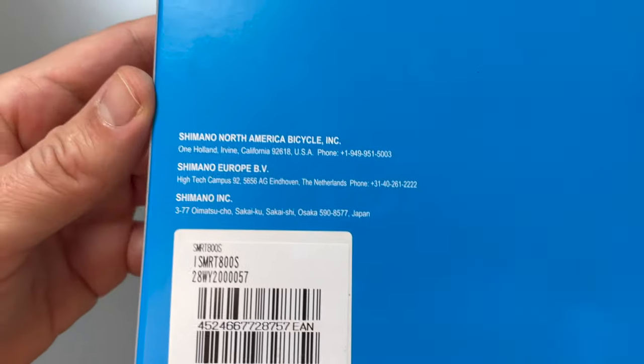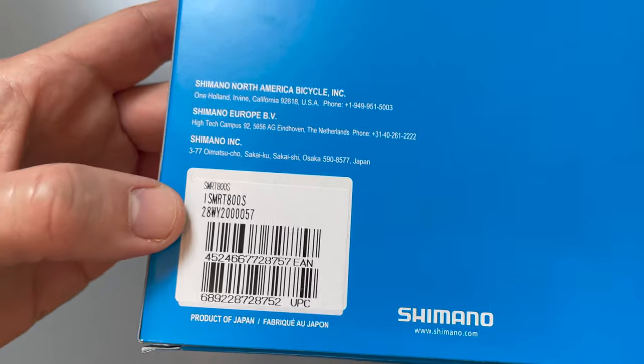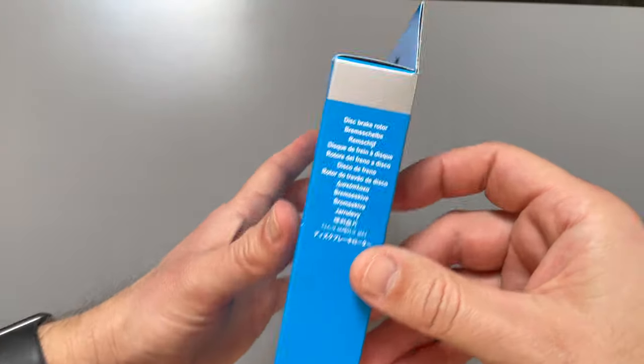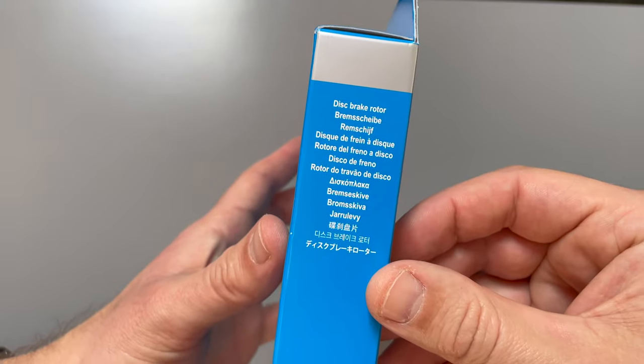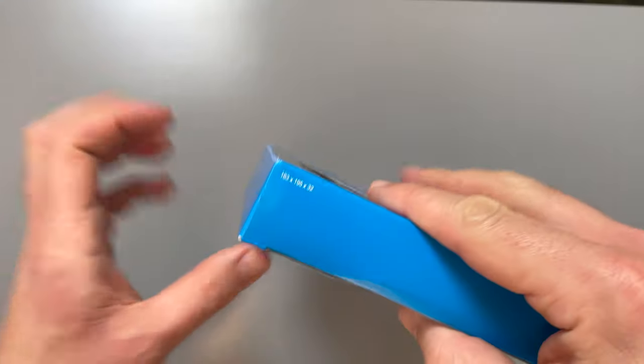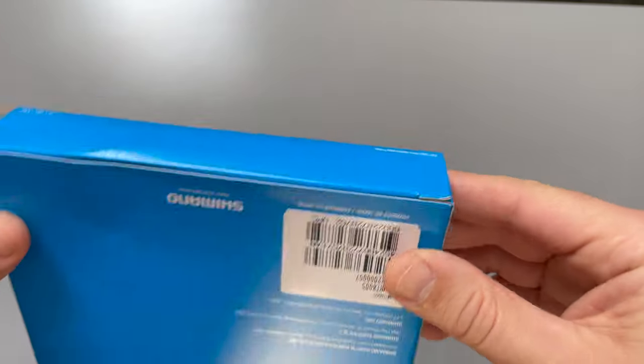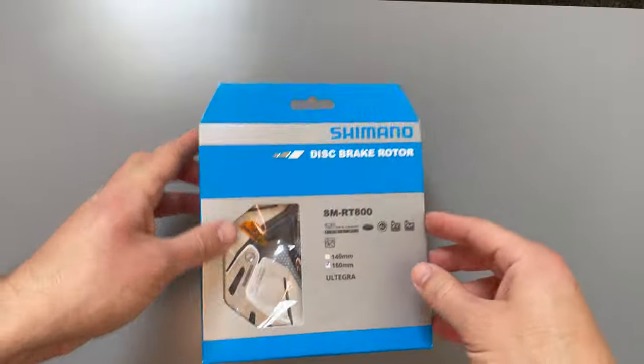The rear of the box has no particular interesting details, just distributor information and barcodes. The product is made in Japan, so these are the higher-end Shimano parts that are always made in Japan. There's not much interesting information on the rest of the packaging, so let's move ahead and get this unboxed.